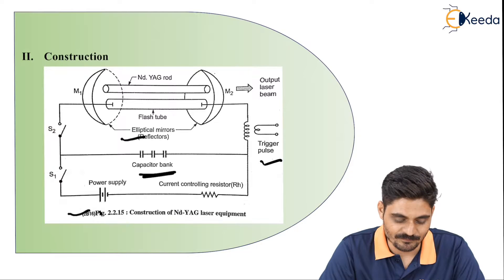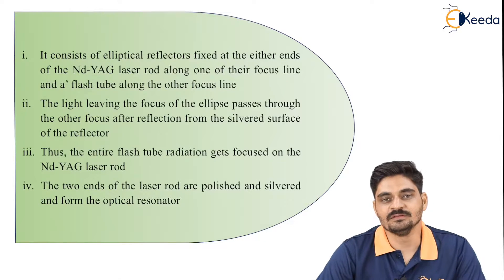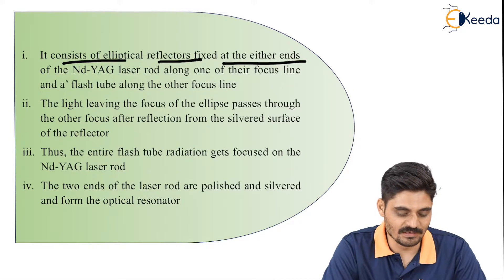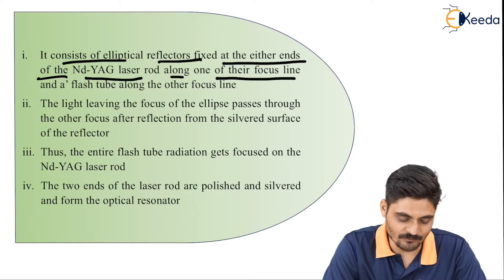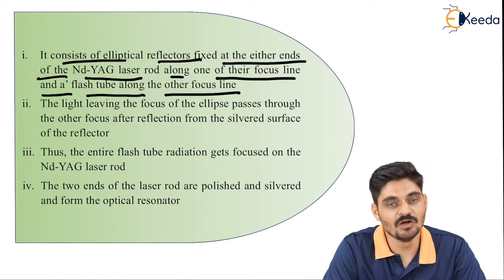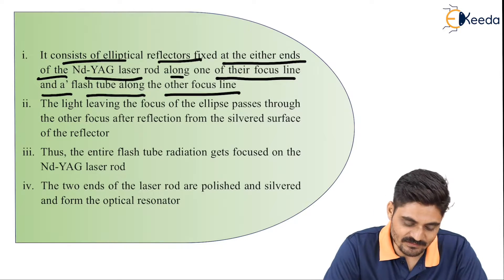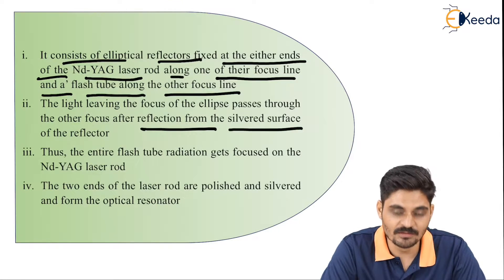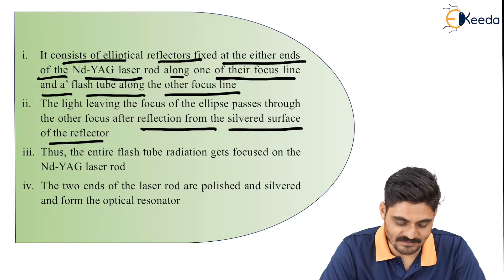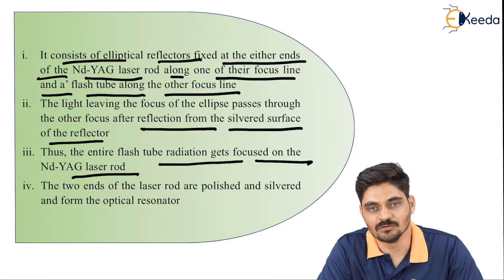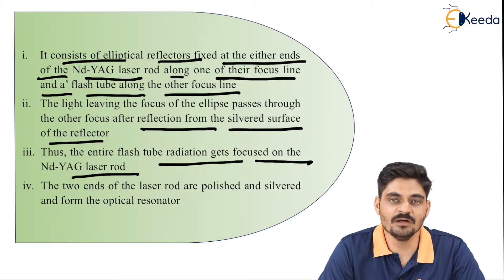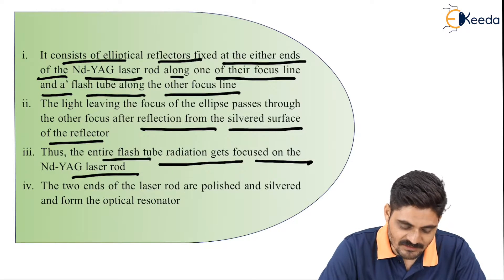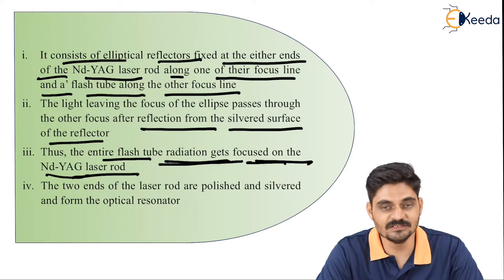Let us understand each component in this diagram. It consists of elliptical reflectors fixed at either end of the Nd:YAG laser rod along one of their focus lines, and a flash tube along the other focus line. Light leaving the focus of the ellipse passes through the other focus after reflection from the silvered surface of the reflector. Thus, the entire flash tube radiation gets focused on the Nd:YAG laser rod, providing stimulating photons to the Nd:YAG material.